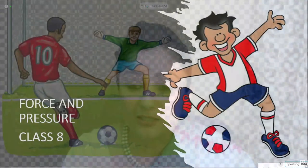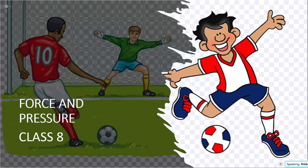Dear children, you can see on your screen a picture of a child playing football. We have all either played this game or seen a game of football on television. If a football is moving at great speed and the player is about to score a goal, the goalkeeper tries to obstruct the path of the ball and the ball stops. Sometimes the speed of the football increases, sometimes it decreases, but this is not happening automatically.